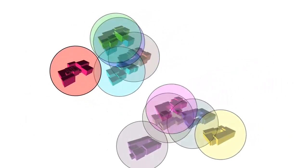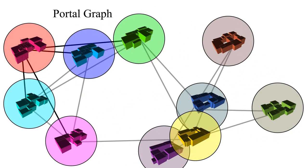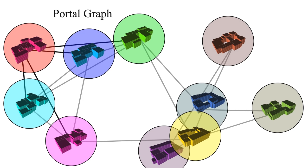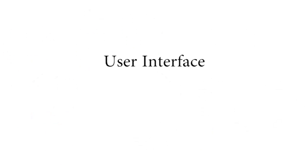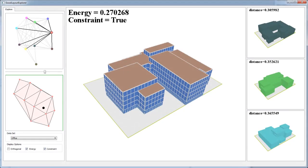Multiple local shape spaces are organised in the form of a portal graph, where each node corresponds to one local shape space, and each edge encodes jumps across pairs of local shape spaces. We now describe how to navigate and explore such good layouts, first at a local scale and then globally across portals.